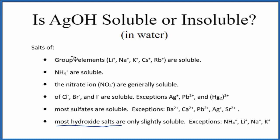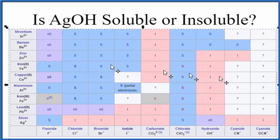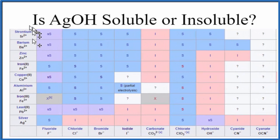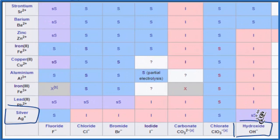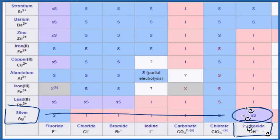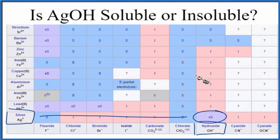We could also look at what's called a solubility chart. On our solubility chart — this is just a portion of the chart — we'd find silver with the positive ions, that's right here, that's silver. Then we'd go across here and here's the hydroxide, and you see SS. We go over and down; SS means slightly soluble. So just a little bit of it will dissolve when you put silver hydroxide in water.